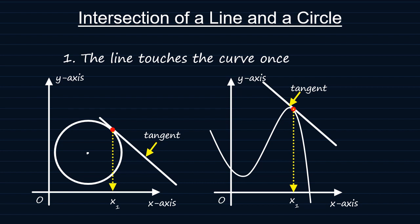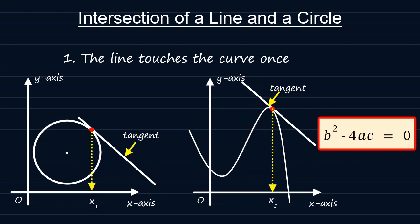If you are to form a quadratic equation, there will only be one repeated real root, b squared minus 4ac equal to zero.